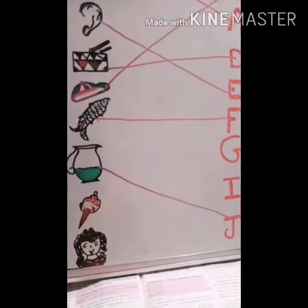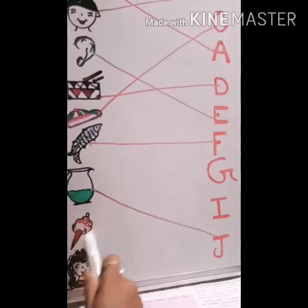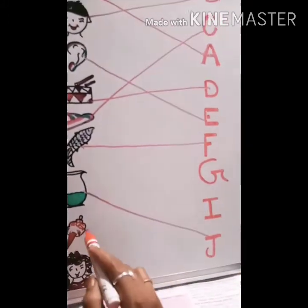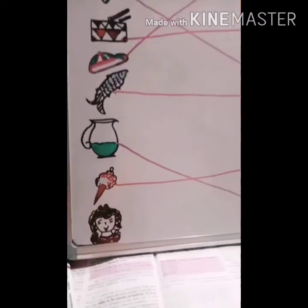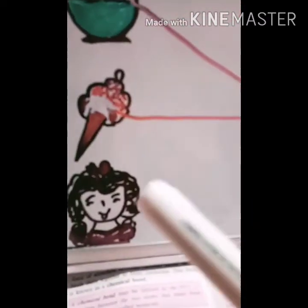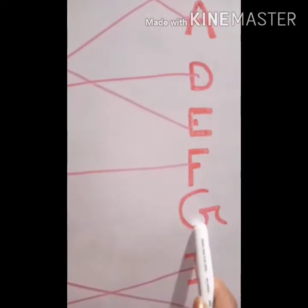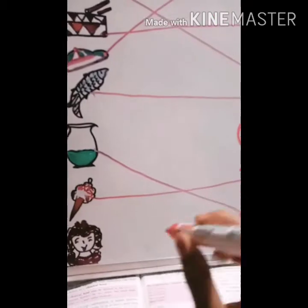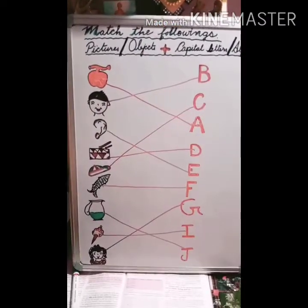I for ice cream. What is this? Ice cream. Where is I? Here. And the last one in this group is G for girl. Where is G? Here.